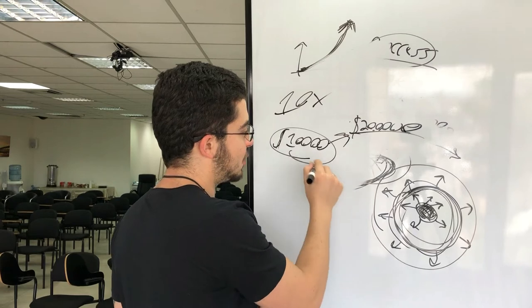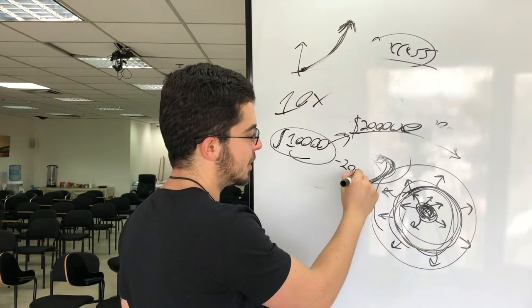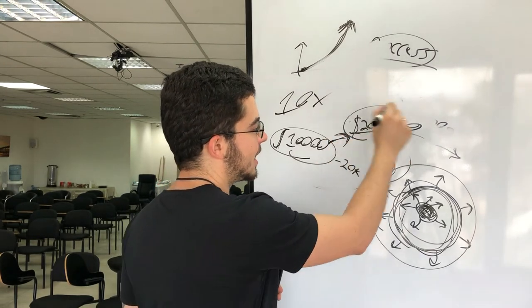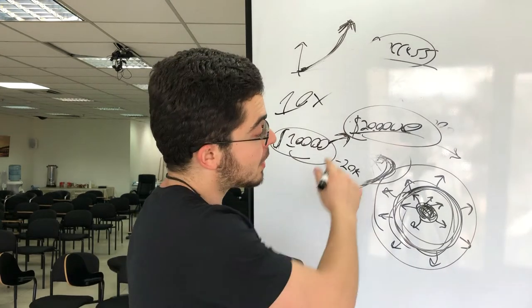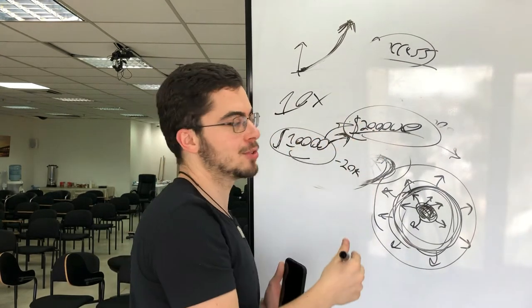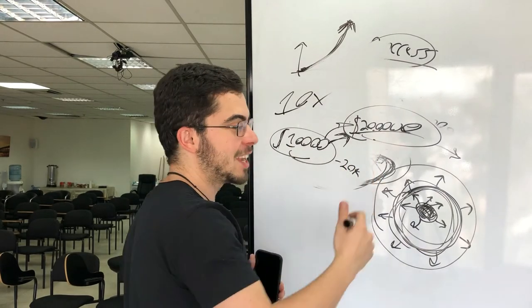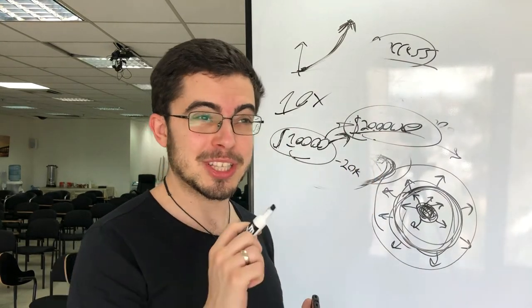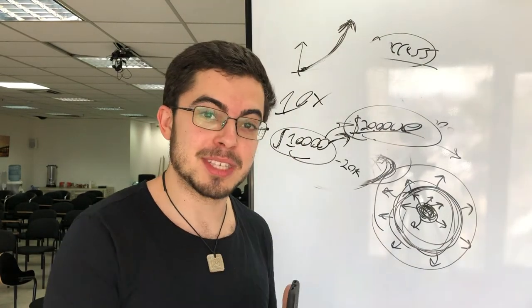Because the vehicle that can get you from 10 to 20,000 is not the same vehicle that can get you to 200,000. So when you start thinking this big, you realize that you cannot do this with increments. You cannot get from 10 to 200,000 with increments, with more hours, with slightly better efficiency, with the same staff.